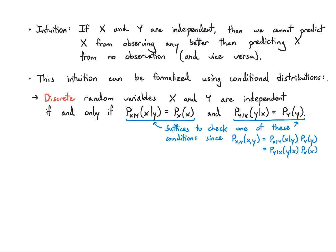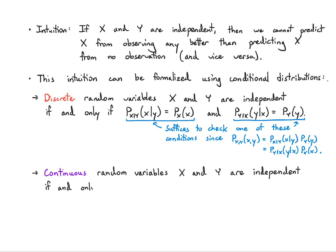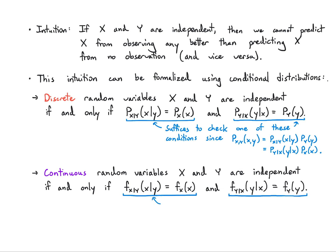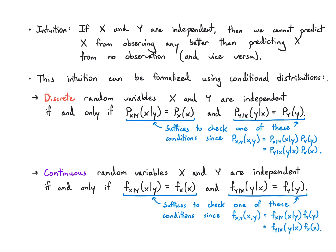Intuitively, the conditional PMF, even though it's technically a function of two variables, only depends on one of them — the one you're interested in. The condition doesn't help you refine that probability at all. The same holds in the continuous case: X and Y are independent if and only if the conditional PDF of X given Y equals the marginal PDF of X, and the conditional PDF of Y given X equals the marginal PDF of Y. Both conditions hold simultaneously, but you only need to check one of them.